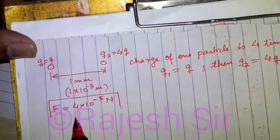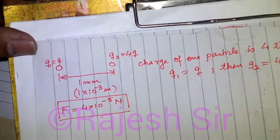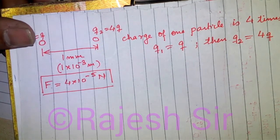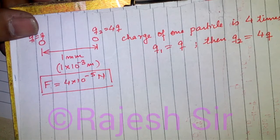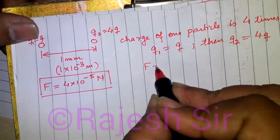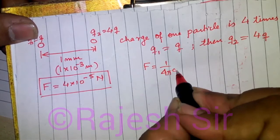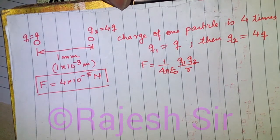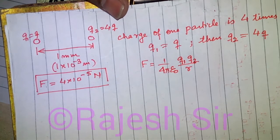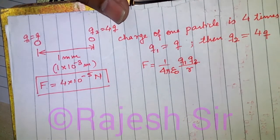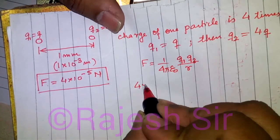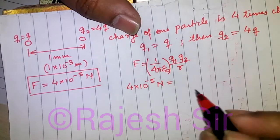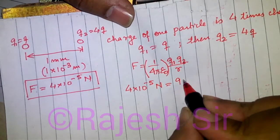As per Coulomb's law of electrostatics, the force between any two point charges is given by F equals 1 upon 4 pi epsilon 0 times q1 q2 by r squared, where q1 and q2 are the magnitudes of the charges. This force in our question is 4 into 10 to the power of minus 5 Newton, and 1 upon 4 pi epsilon 0 is a constant equal to 9 into 10 to the power of 9.